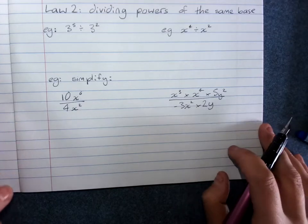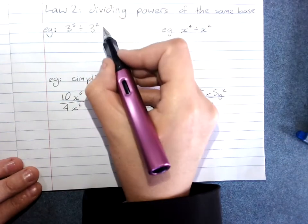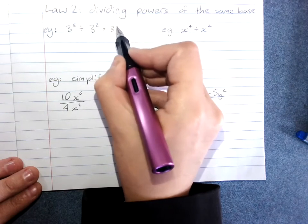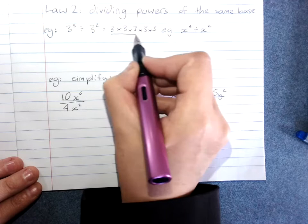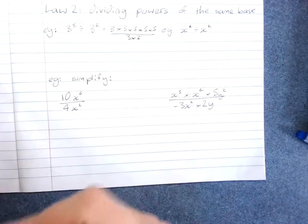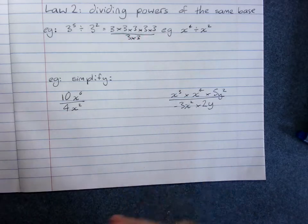Going with that is law 2, dividing powers of the same base. And in the same way I'm going to expand this one out. That's 3 to the power of 5 divided by 3 to the power of 2. And we know we're allowed to cancel common factors.